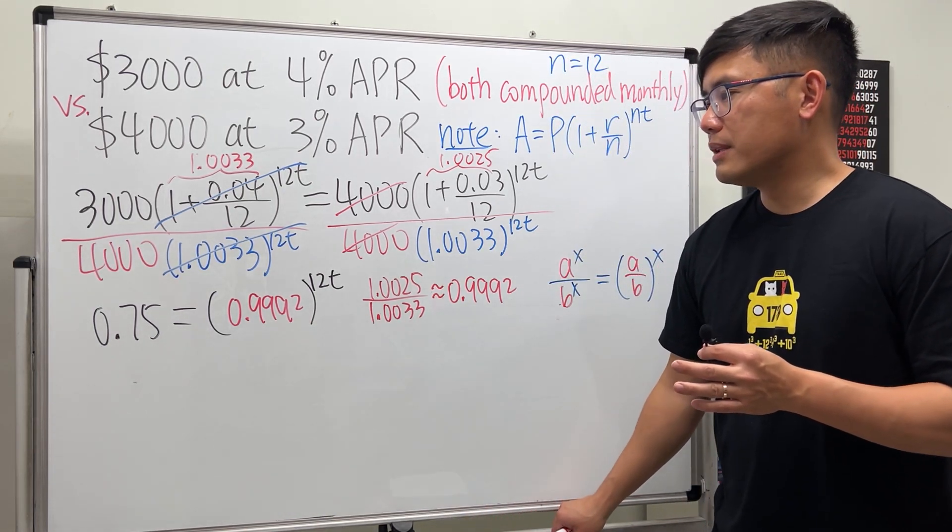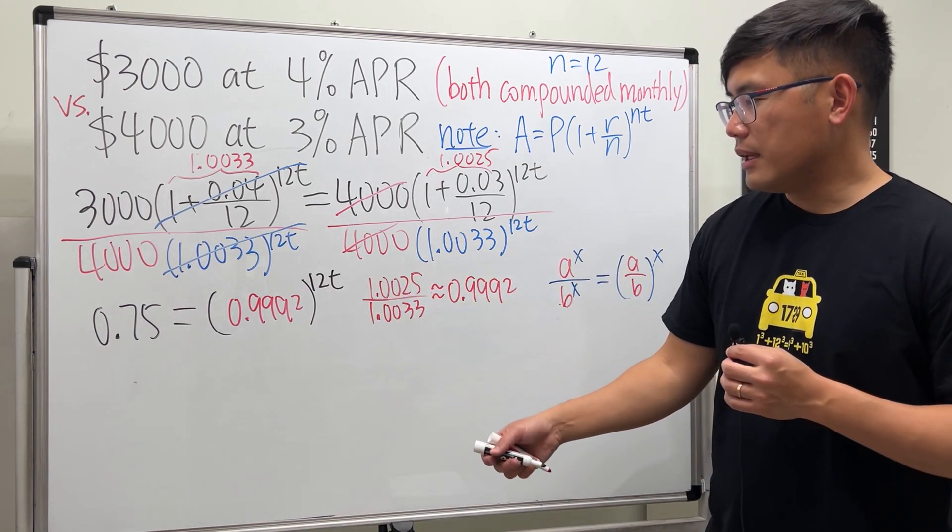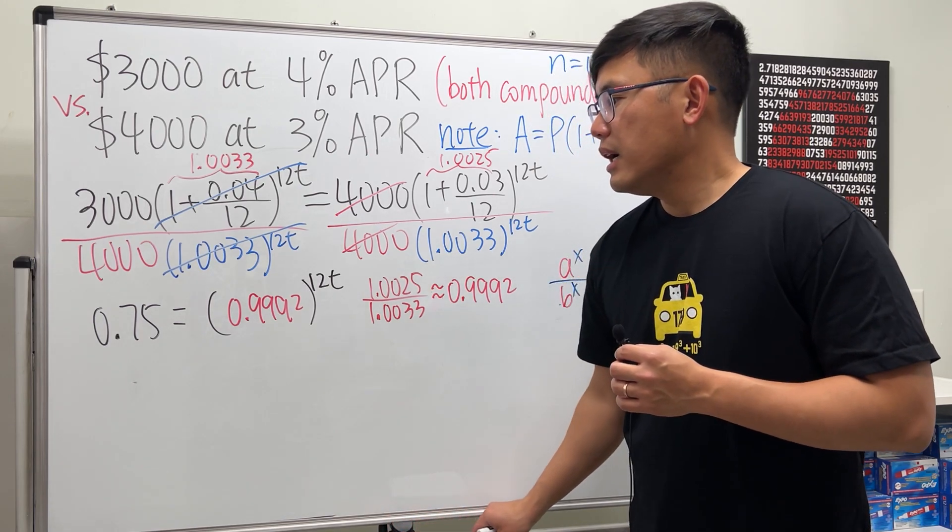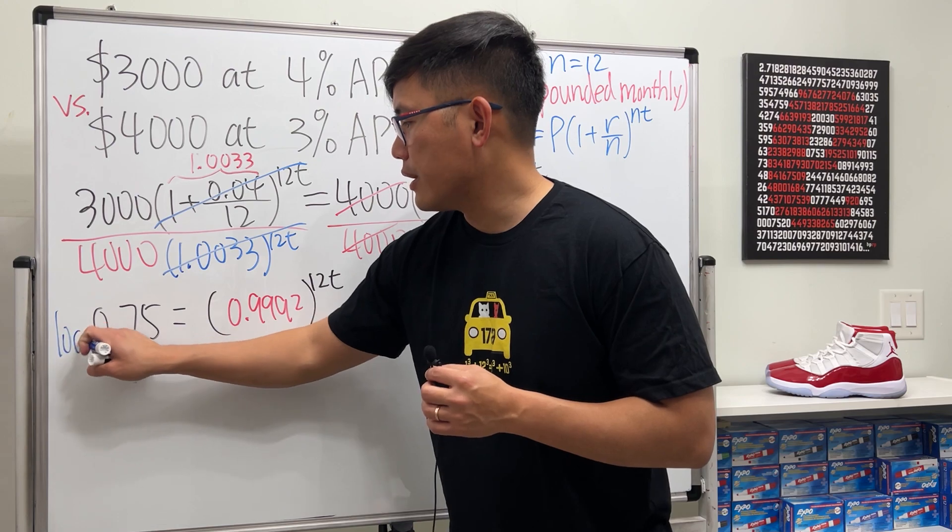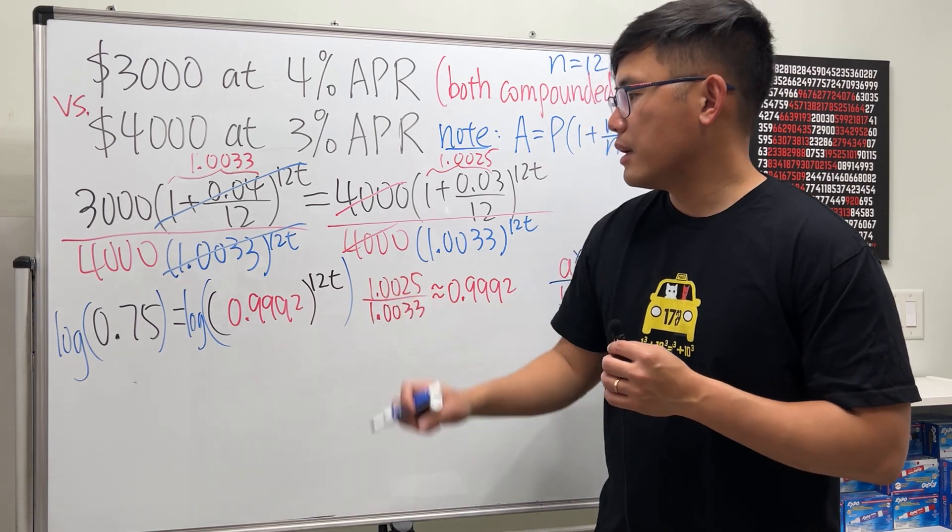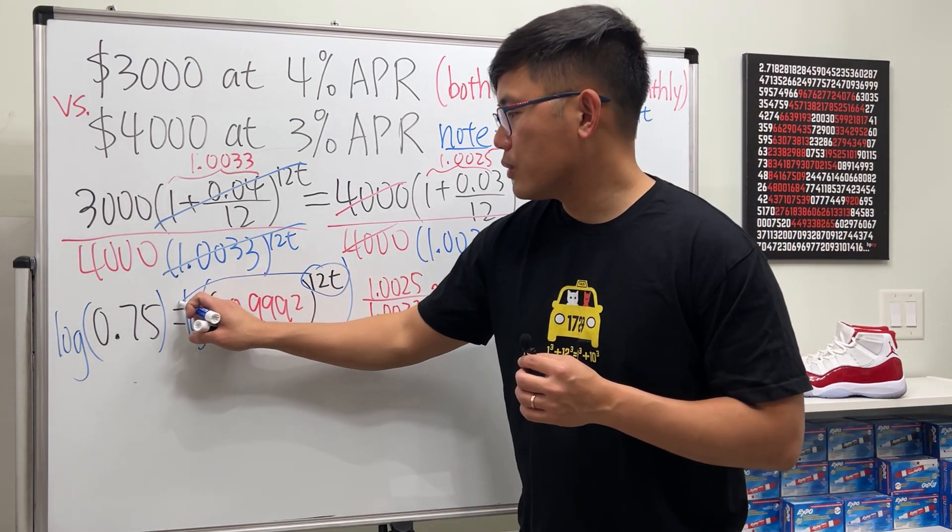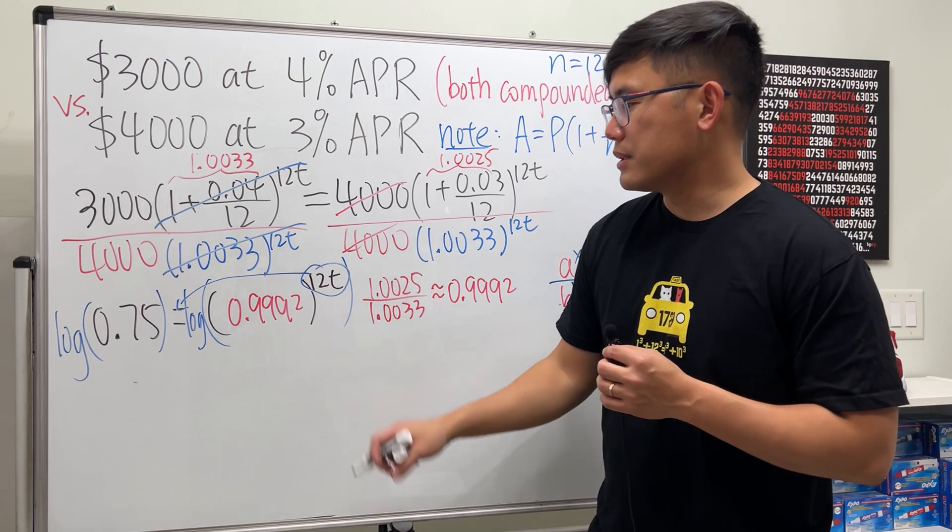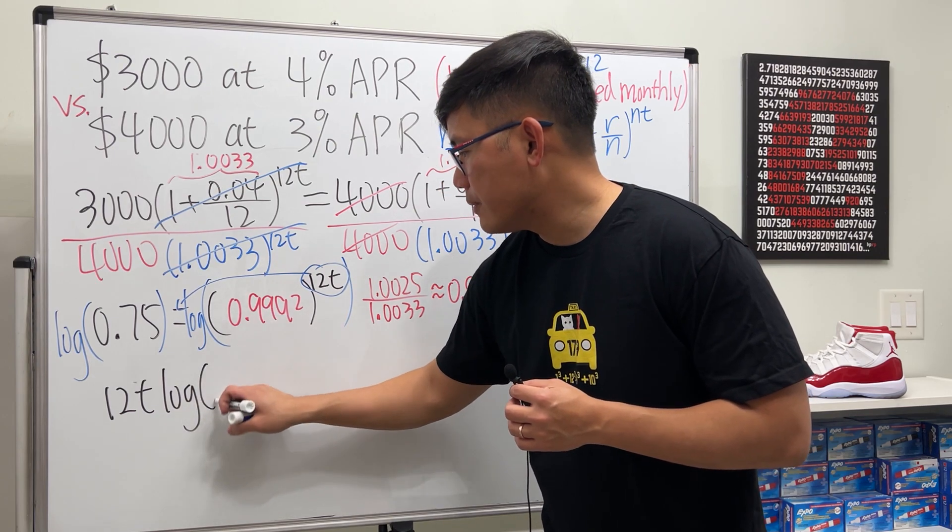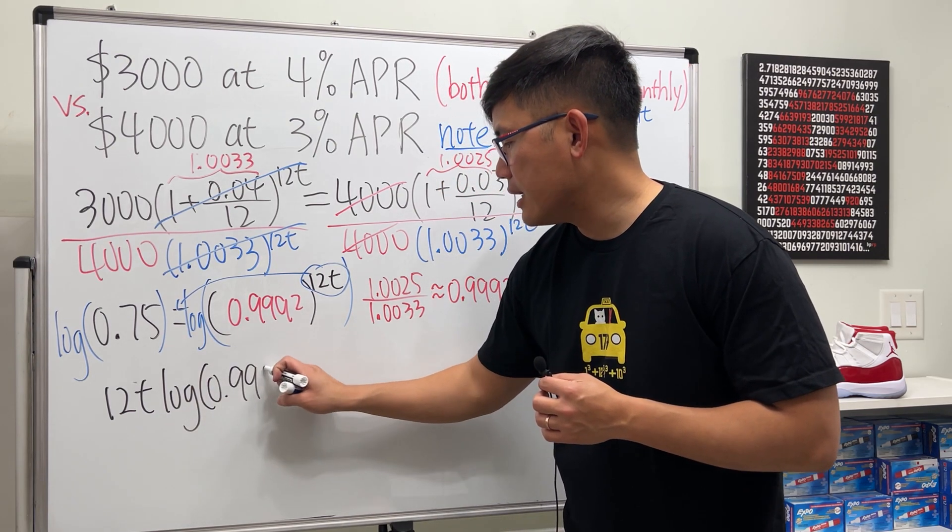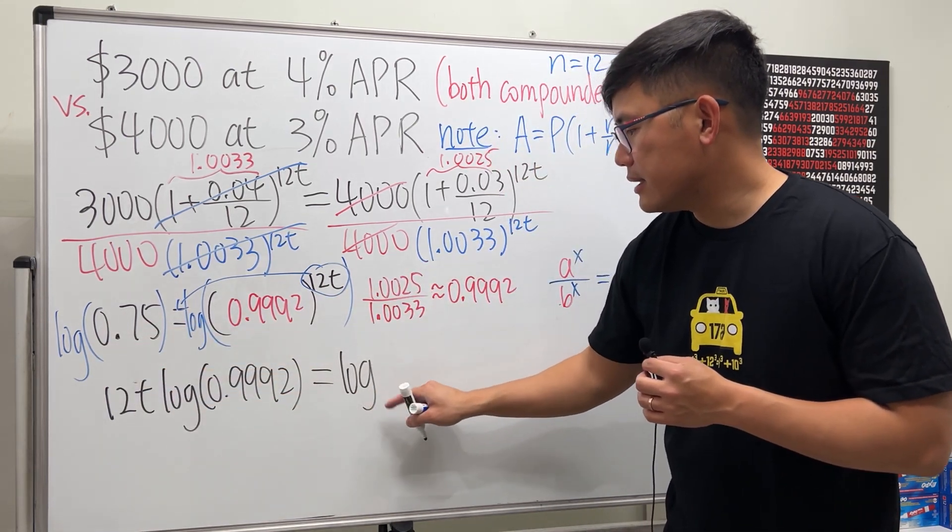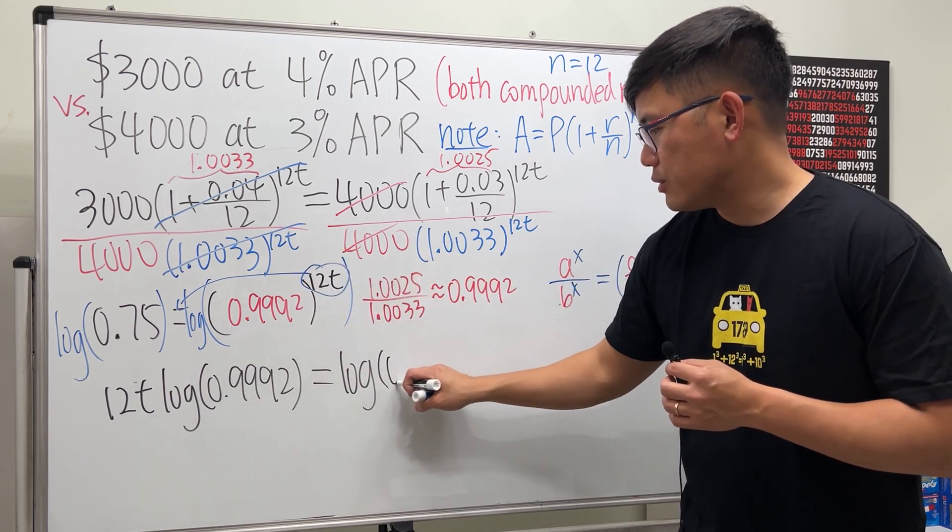Now we have a much better looking exponential equation. The t is in the exponent, so to solve this we will have to take the logarithm. Let's just use log on the calculator - log base 10, nothing too special. Put this power to the front. I will get 12t times log(0.9992), and that's equal to log(0.75). This means log base 10 on the calculator.